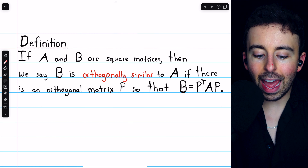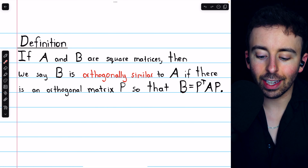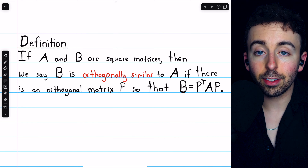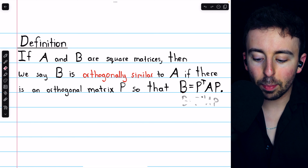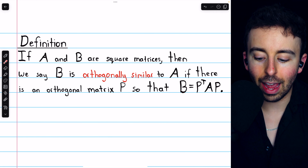Here's our main definition. If A and B are square matrices, then we say B is orthogonally similar to A if there is an orthogonal matrix P so that B equals P transpose AP. Since P is orthogonal, this is the same as saying B equals P inverse AP. A matrix is orthogonal if its inverse is its transpose. So this is just like normal similarity except the equation is written as P transpose times A times P.